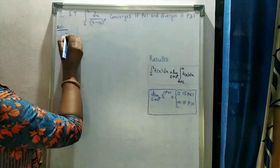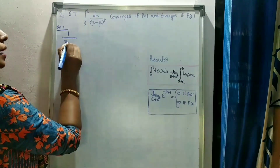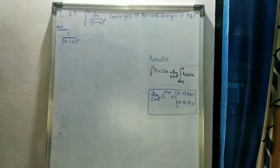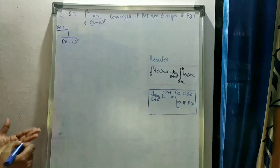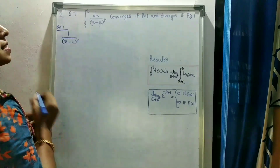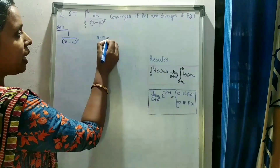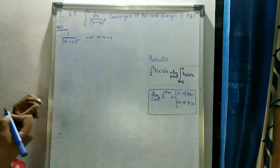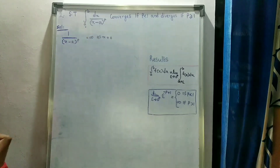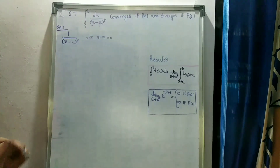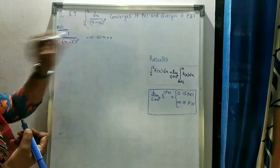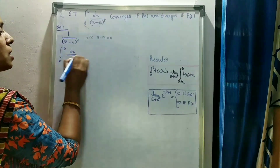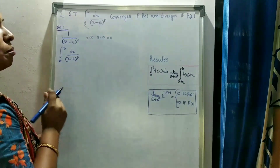The integrand 1 divided by (x minus a)^p becomes infinity at the lower limit x equals a, since putting x equal to a gives 1 divided by (a minus a), that is 1 by 0, which is infinity. Therefore the given improper integral has an infinite discontinuity at x equals a.